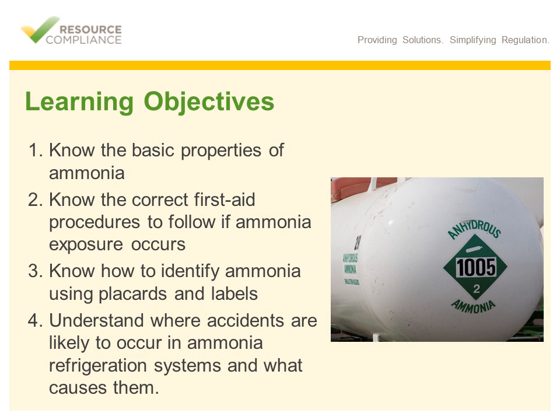There are several learning objectives to keep in mind throughout this training. Upon completion, you should: number one, know the basic properties of ammonia; two, know the correct first aid procedures to follow if ammonia exposure occurs; three, know how to identify ammonia using placards and labels; and four, understand where ammonia accidents are likely to occur in ammonia refrigeration systems and what causes them.